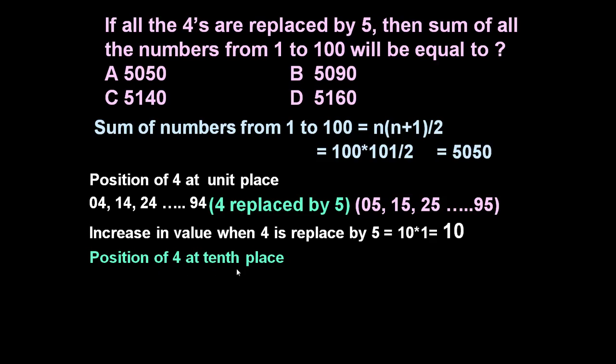Now let us see position of 4 at 10th place, means 40, 41, 42, 43, 44, 45, 46, 47, 48 and 49. Again 10 such numbers are there in which 4 is at its 10th place. Now replace 4 by 5. When this 4 is replaced by 5, these numbers will become 50, 40 will become 50, 41 become 51, 42 become 52, 49 become 59. So if you see here each number is increased by 10.